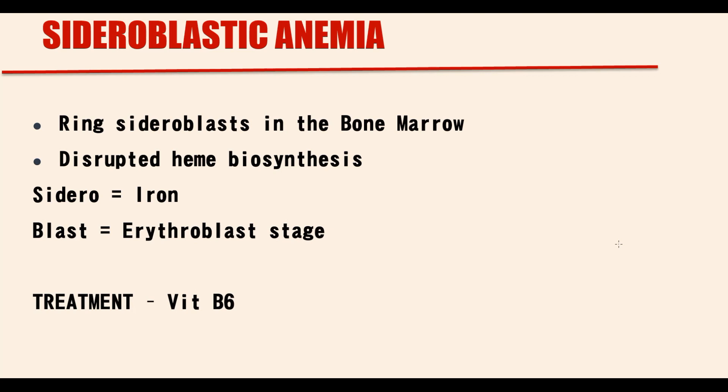Sideroblastic anemias is a group of anemias with two signature features: ringed sideroblasts in the bone marrow, which are abnormal erythroblasts with excessive iron accumulation in the mitochondria, and impaired heme biosynthesis. To explain the pathogenesis of sideroblastic anemias, we have to understand heme biosynthesis.